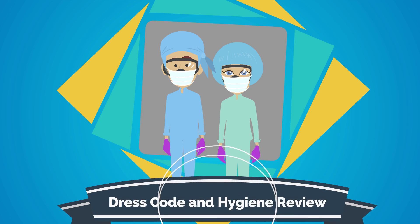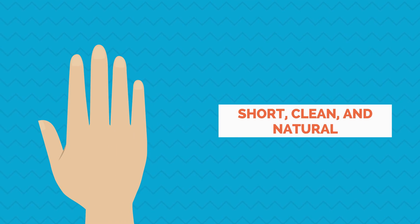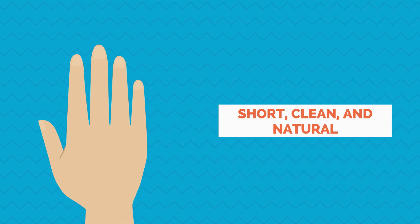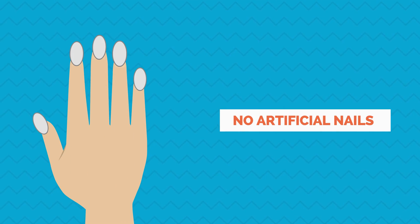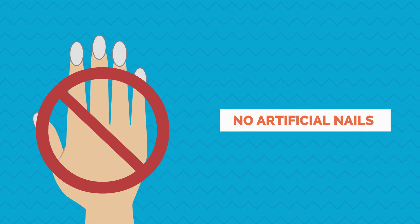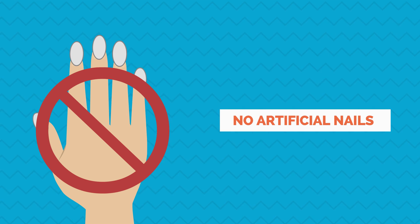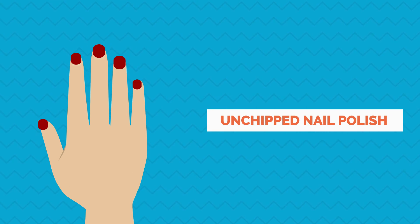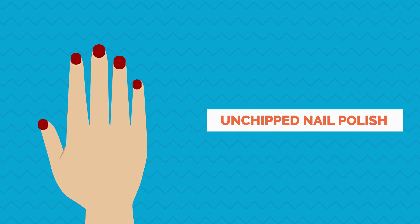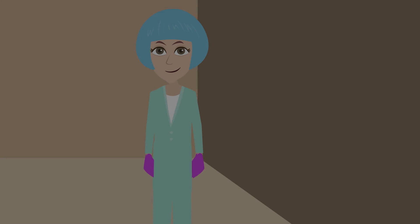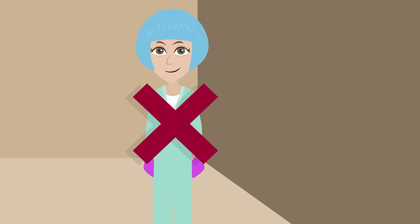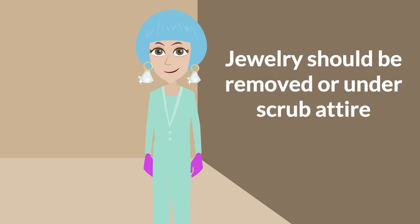Dress code and hygiene review: staff in perioperative areas should have fingernails that are short, clean, and natural. Staff are not allowed to wear acrylic or artificial nails or fillers. If nail polish is worn, it should be unchipped. Clothing underneath scrubs should not be visible, including turtlenecks or long-sleeved t-shirts. Jewelry should be removed or contained under scrub attire, and earrings should be completely enclosed by the head covering.